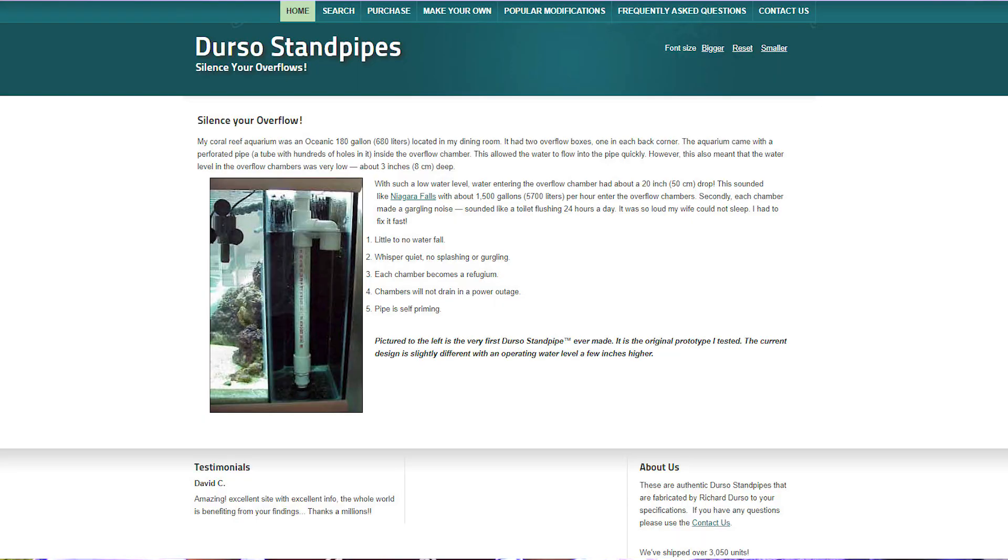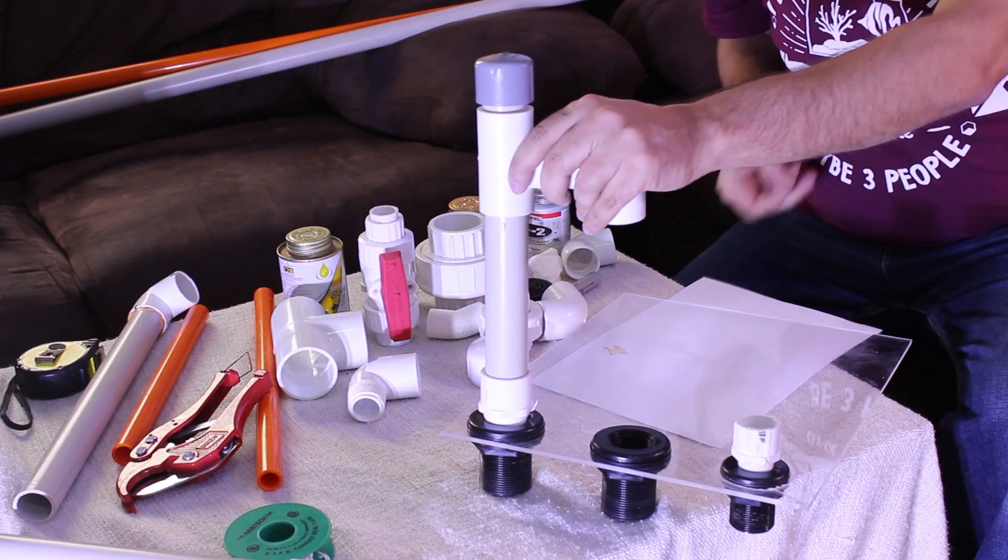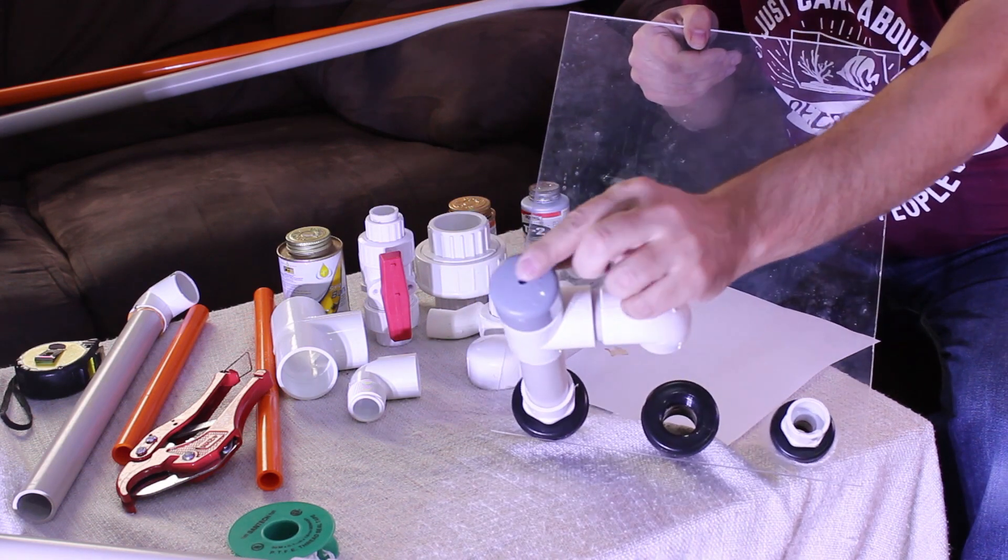The Durso is very simple and common. It is implemented in many ready-made tanks. The downside of Durso is that there is no safety backup and it's typically loud. Still, some people prefer them as they are simple to implement and take less space than other overflow styles. Durso is a simple standpipe with an elbow turned down and a small drilled vent at the top.